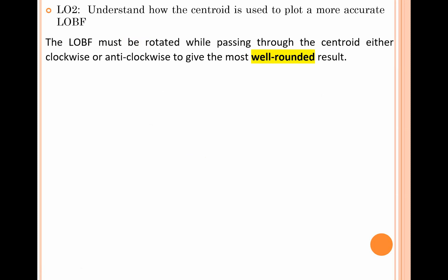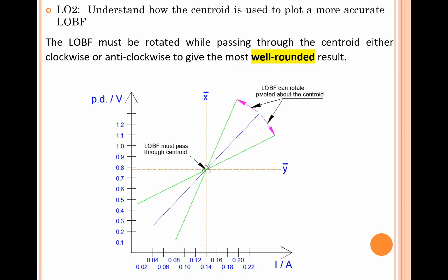The line of best fit must be rotated while passing through the centroid, either clockwise or counterclockwise, to give you the most well-rounded result. You have your centroid, and let's imagine your blue line is your current position of your ruler for the line of best fit. You can rotate that ruler counterclockwise about that particular centroid to give you the most rounded line of best fit, or you can rotate it clockwise about that centroid. Your line of best fit must pass through this centroid.